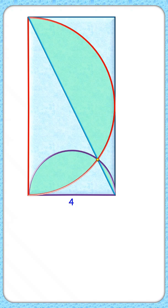This question is really fun. Here we have to find the area of this green shaded region. We are given a rectangle with width 4 centimeters having two semicircles inside it, the purple one and the red one.